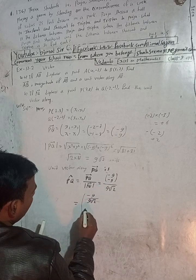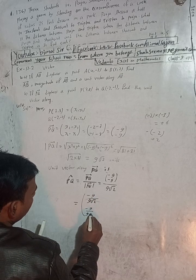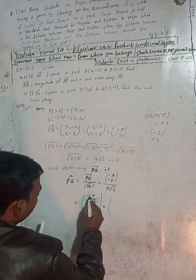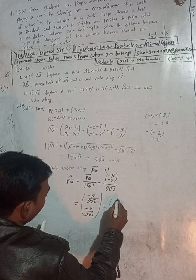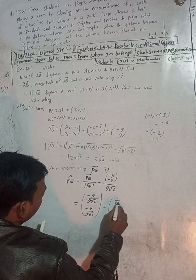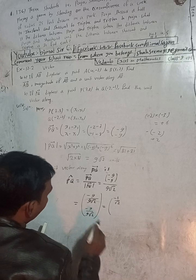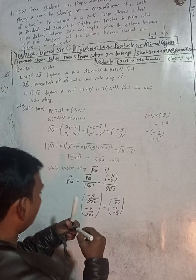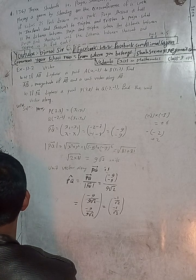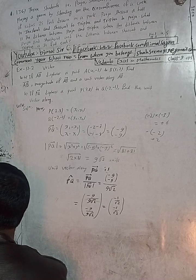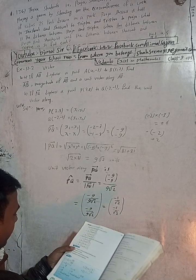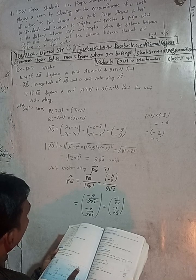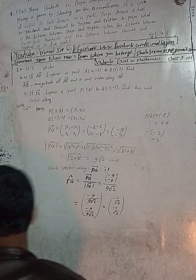The unit vector of PQ is PQ vector divided by modulus of PQ vector, which is (-9, -9) divided by 9 root 2. The 9s cancel out, giving (-1/root 2, -1/root 2). So the magnitude of PQ vector is 9 root 2 and the unit vector is (-1/root 2, -1/root 2).